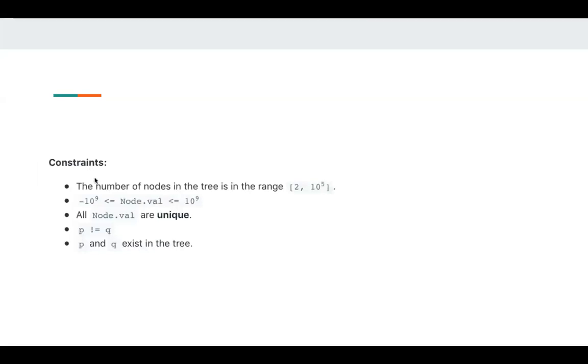Let's take a look at the constraints. So p and q exist in the tree, and p is not the same as q.